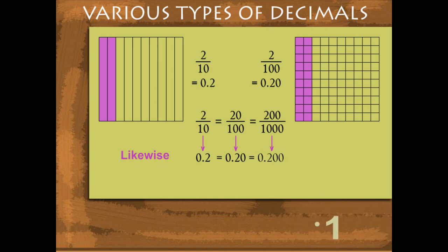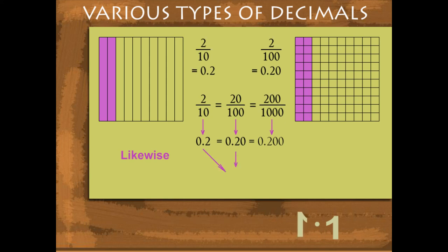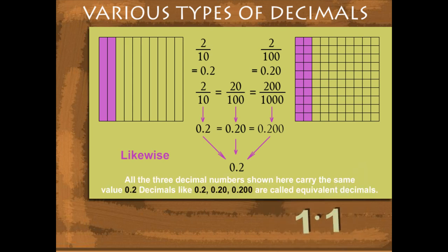Thus, all these decimals are equal in magnitude to 0.2. Therefore, they are called equivalent decimals.